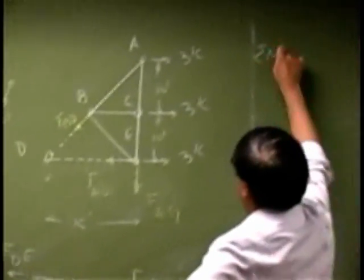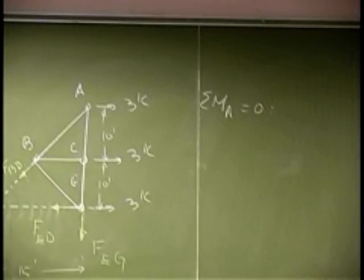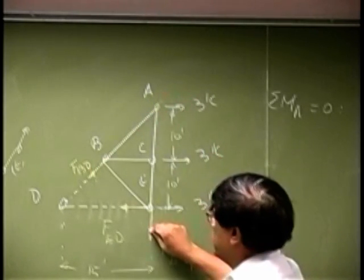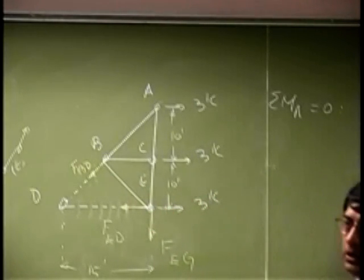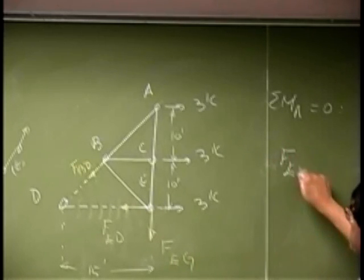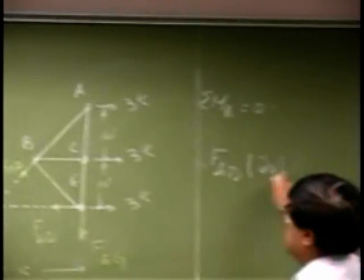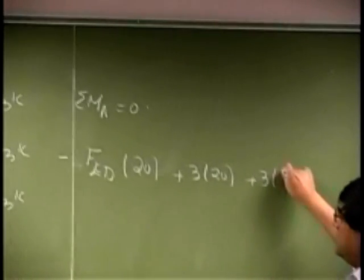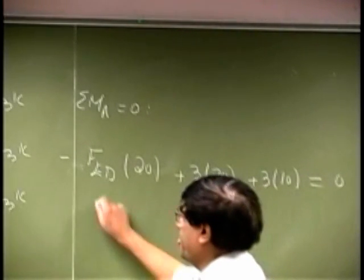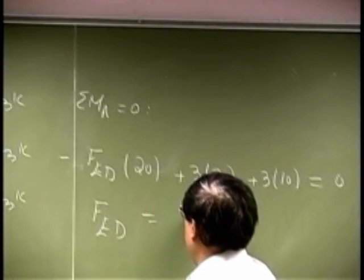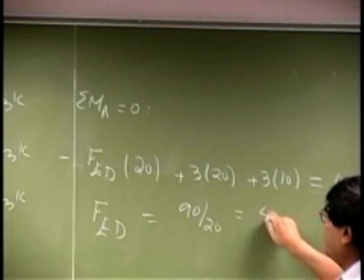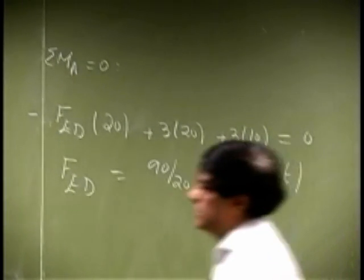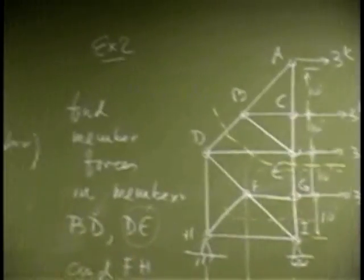Now, if I sum the moments about point A, that should go to 0. And the reason we choose this point is this force goes through it, this force goes through it. So these 2 will give 0 moment. So D will be 0. So you get FED times 20, that is clockwise so it's negative. Then we have 3 times 20, that is clockwise so positive. Another 3 times 4 times 10, and that goes to 0. So you get FED as 90 over 20 or 4.5 kip. Came out positive, remains in tension. So that gave us our first force. We needed this and we already have it.